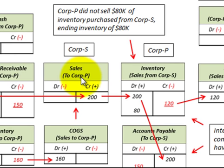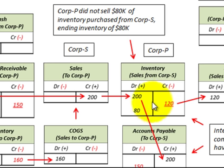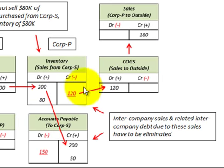We're going to look at the sales of goods or merchandise sold between affiliated companies that file consolidated financial statements, and the accounting required for this consolidation. Corporation S, a subsidiary of Corporation P, sells goods to Corporation P, and not all those goods will have been sold by the consolidation date. Intercompany goods transferred from Corporation S to Corporation P, where unsold goods remain in Corporation P's ending inventory, require special accounting. The intercompany sales and any related intercompany debt due to these sales must be eliminated for the consolidation.